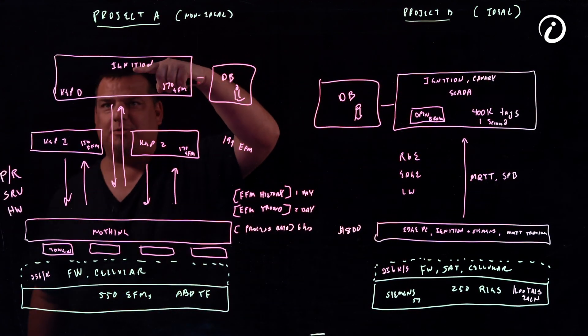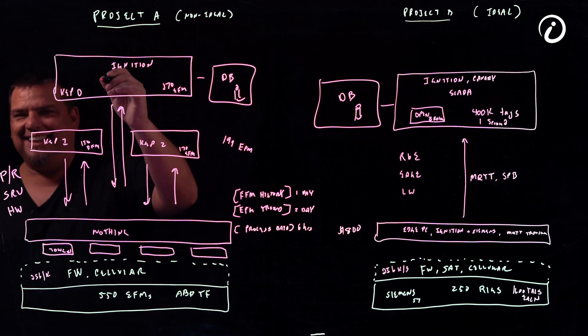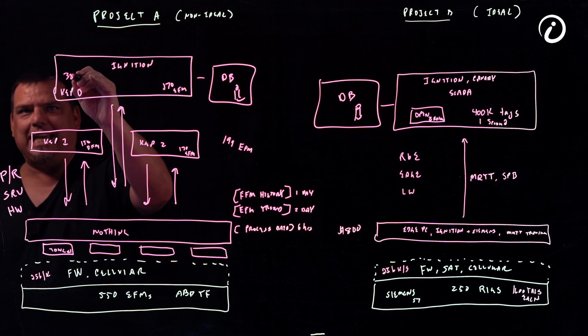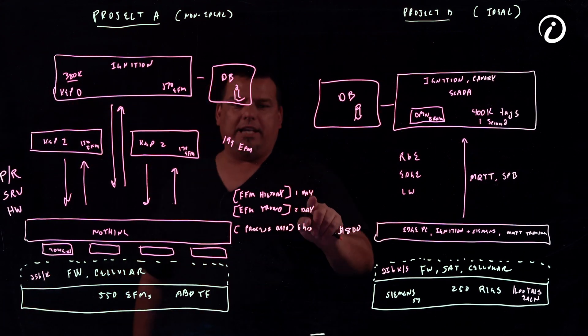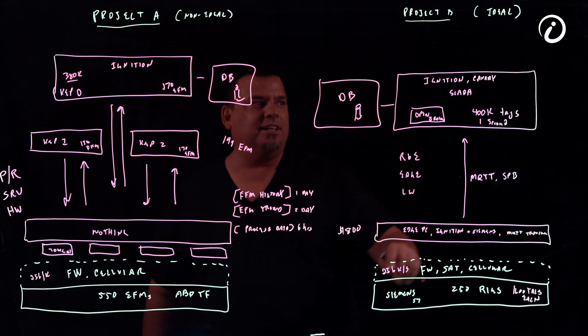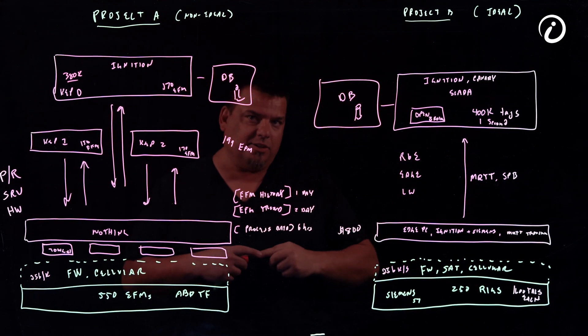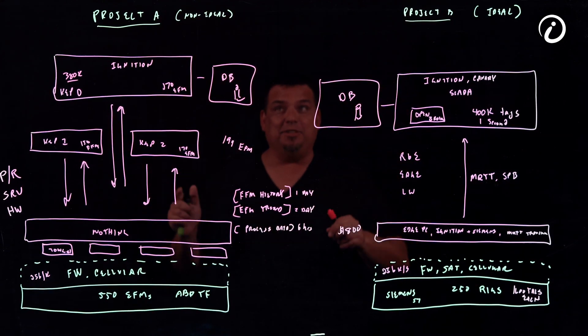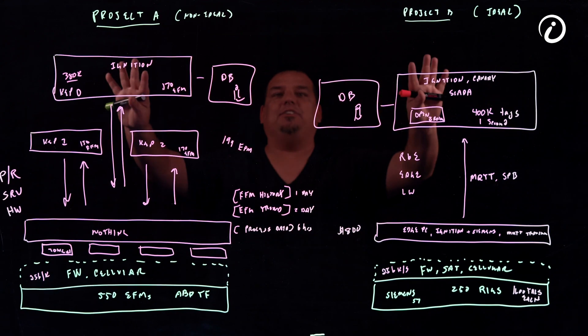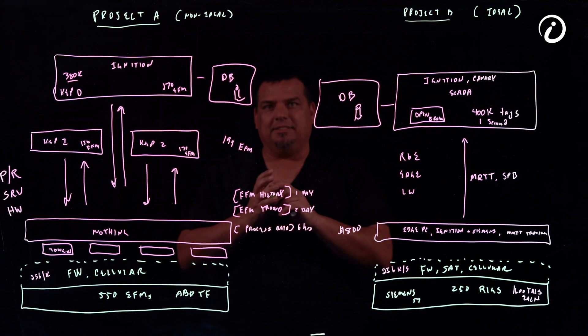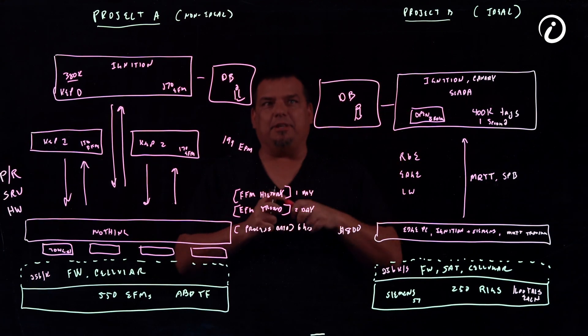Over here guess how many tags we have. I actually just looked this morning. 380k. 380k we get one day, twice a day, every six hours. 400,000 we get it one second after it changes. Who do you think gets more value from their system? Yeah it's definitely project B.